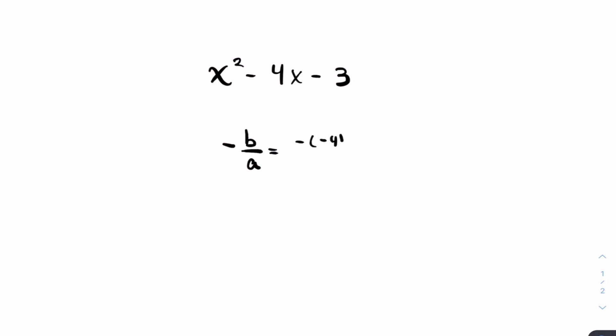Negative negative 4, which is b, divided by a, which is 1. That equals 4 over 1, which equals 4, which is the sum of the solutions in like two seconds. Easy.